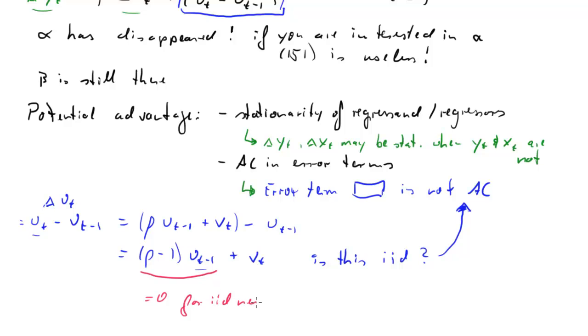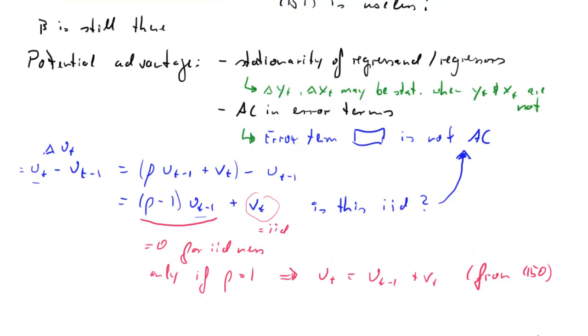For IID-ness, only if that is 0, then what we are left with is this vt which we know is IID. Now, this is going to be 0 only if rho is equal to 1. Now, rho equal to 1, this was the case where ut was equal to ut minus 1 plus vt. This is from equation 150. This was a non-stationary case for ut. So if ut was non-stationary, because that was the case where rho is equal to 1.